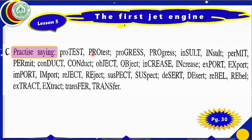Practice words: protest/PROtest, progress/PROgress, insult/INsult, permit/PERmit, conduct/CONduct, object/OBject, export/EXport, import/IMport, reject/REject, suspect/SUSspect, desert/DEsert, rebel/REbel, extract/EXtract, transfer/TRANSfer. Listen to the stress difference between the verb and noun form of each word.